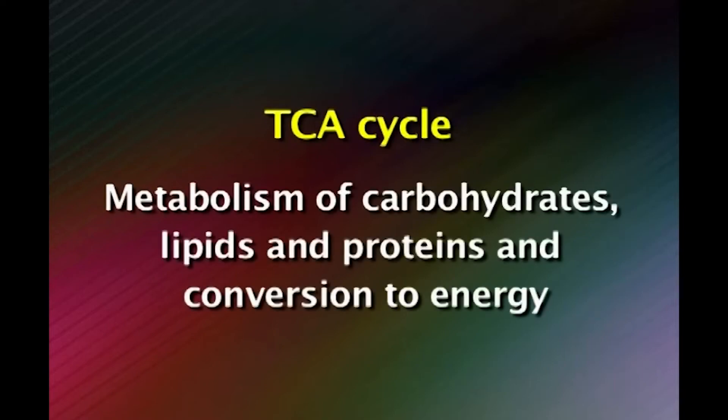To summarize today's class: proteins are composed of amino acids, which you are already aware of, and these are either degraded to urea and excreted or shunted into other biosynthetic pathways. These pathways connect with other important metabolic cycles in the body. The TCA cycle is the intermediate cycle for metabolism of carbohydrates, lipids, proteins and their conversion to energy.